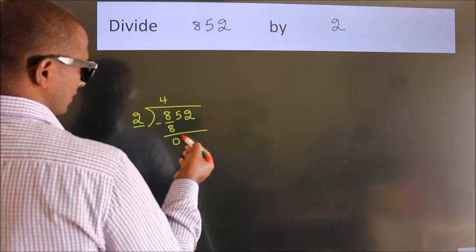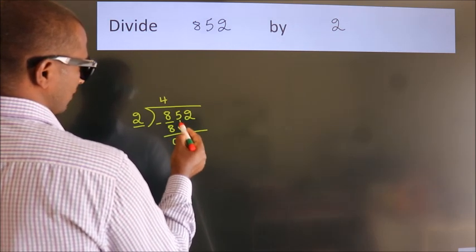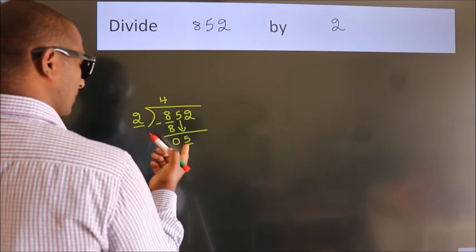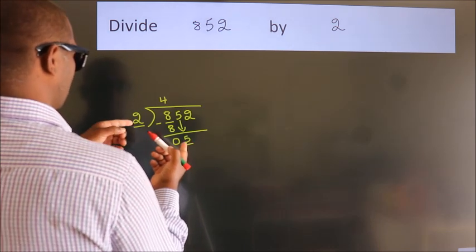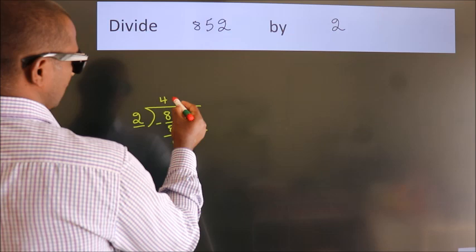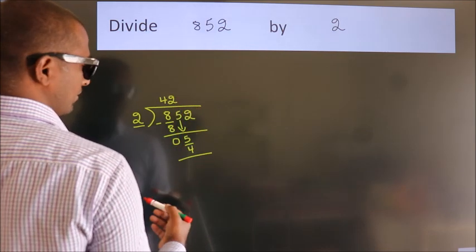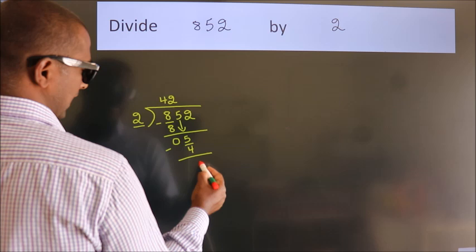After this, bring down the beside number. So 5 down. A number close to 5 in 2 table is 2 2s, 4. Now we subtract. We get 1.